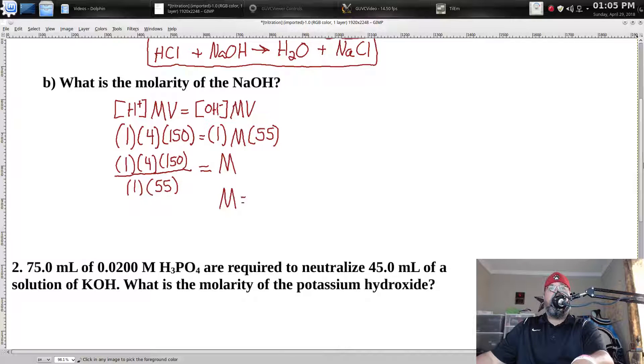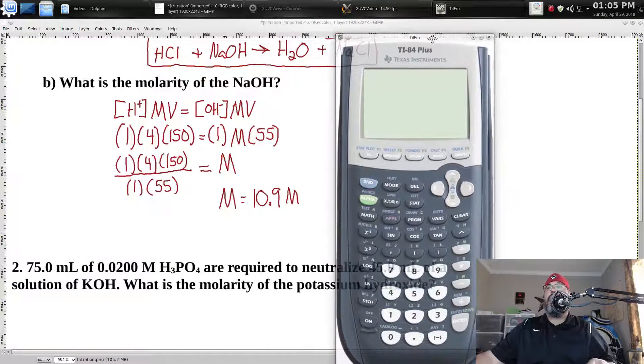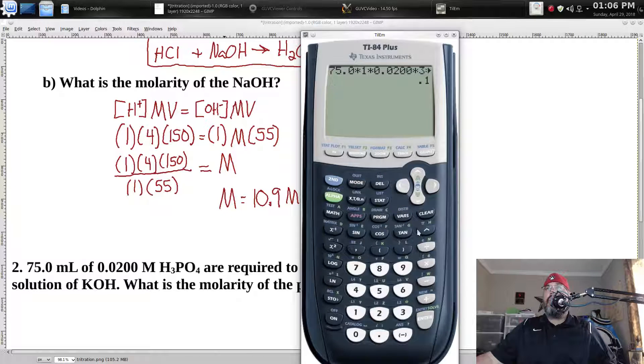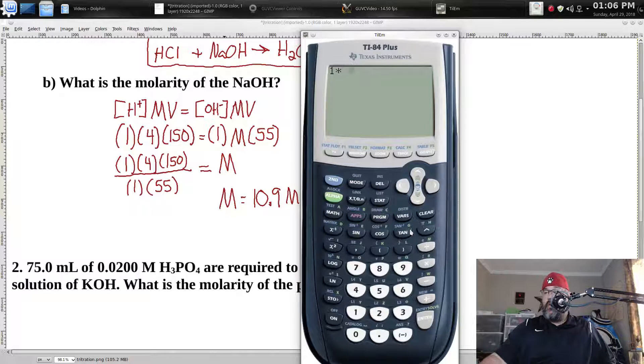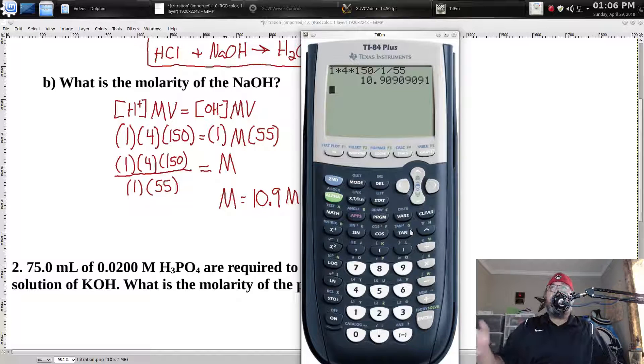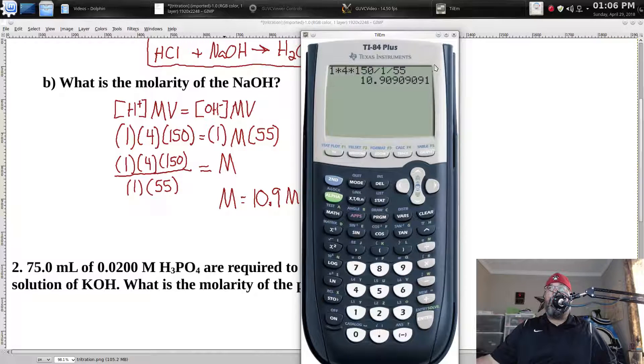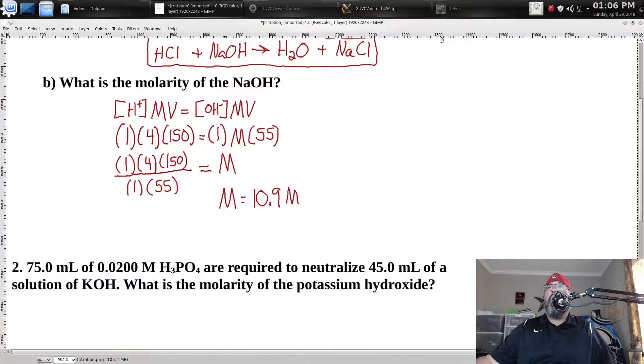And since I don't have to worry about moving the 1, the 4, and the 150 because they're already on the other side, I can just write them down again. And then I'm going to put the 1 and the 55 on the bottom there. Now, when I do this and I punch this into the handy-dandy calculator, I get 10.9 and some change. Now, granted, if you don't really believe me and everything, I can punch that in for you really quickly. We've got 1 times 4 times 150 divided by 1 divided by 55. We end up getting 10.90909090909 repeating.